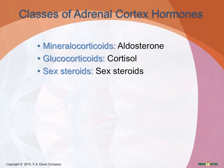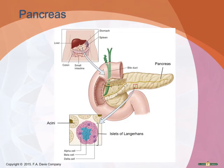The pancreas contains both endocrine and exocrine tissues. The majority acts as an exocrine gland, secreting digestive enzymes into ducts draining into the small intestine. Scattered among the exocrine cells are clusters of endocrine cells called pancreatic islets, or islets of Langerhans. These islets contain alpha cells, beta cells, and delta cells.